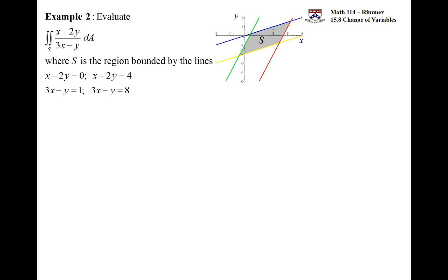You have this region in the xy plane which would be very difficult to integrate. Let alone the integrand is difficult to integrate: x minus 2y on top of 3x minus y. But what you should see is that these lines, x minus 2y in the numerator and 3x minus y in the denominator, they share that. It's a natural kind of substitution.